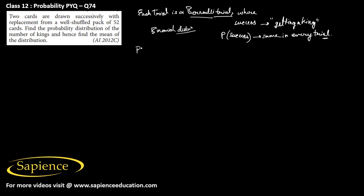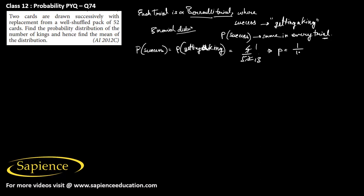The probability of success equals the probability of getting a king. Since there are four kings in a deck of 52 cards, that would be 4 by 52, which simplifies to 1 by 13. So p equals 1 by 13, and q equals 1 minus 1 by 13, which is 12 by 13.